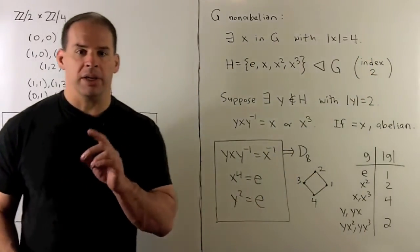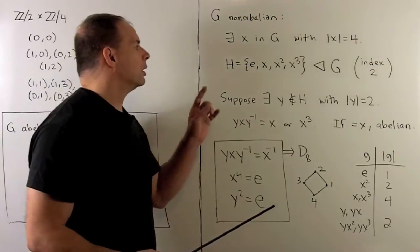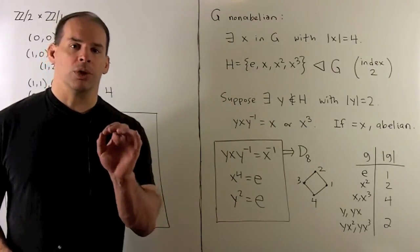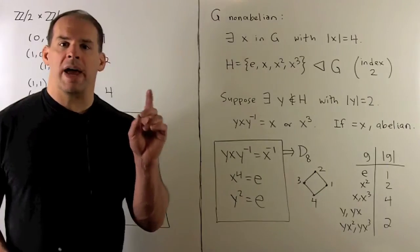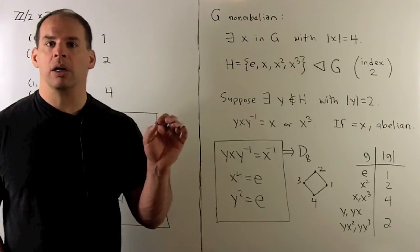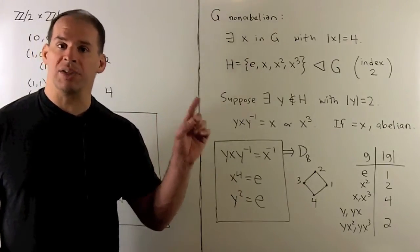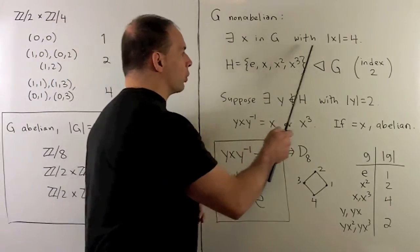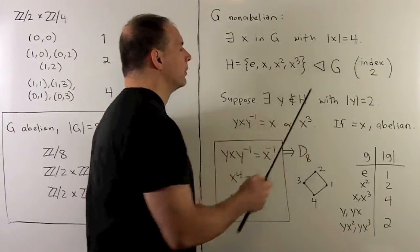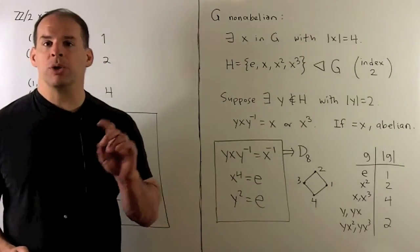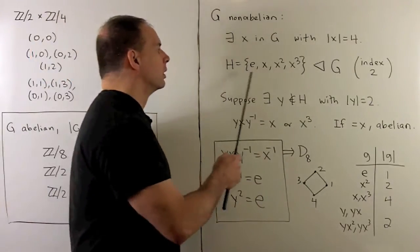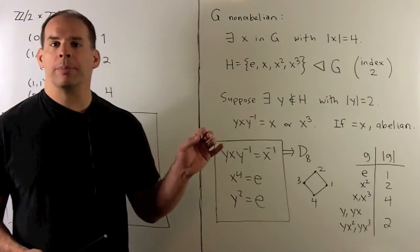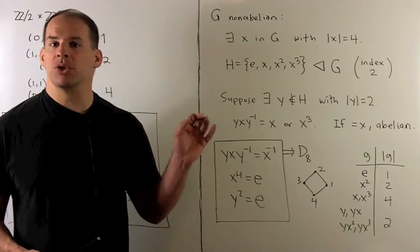For the non-abelian case, we know we can't have all elements with order 2 or 1. So there has to be an element of order 4 and no elements of order 8 — otherwise it's cyclic. So let x be our element of order 4, which generates a subgroup H. Because that subgroup has order 4 and index 2 in G, it's normal.